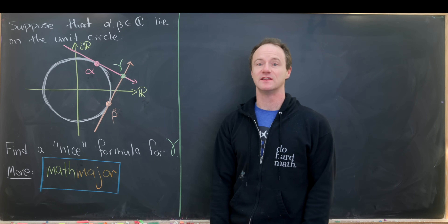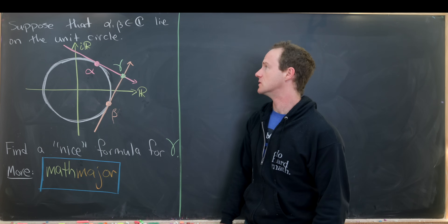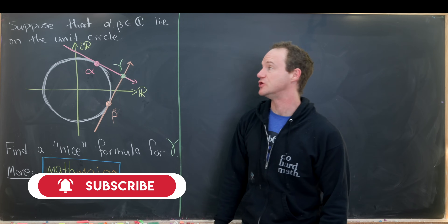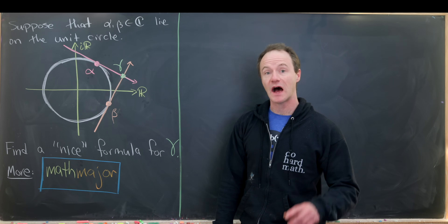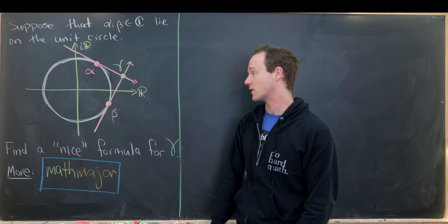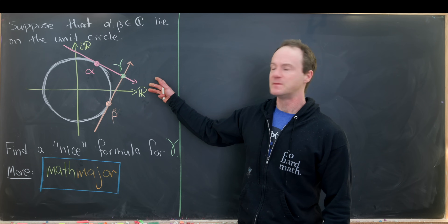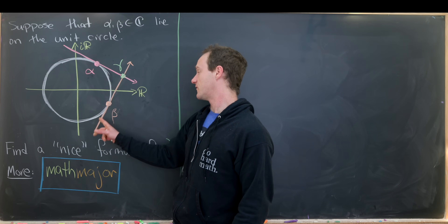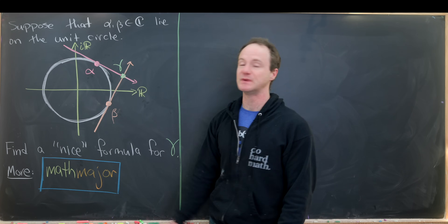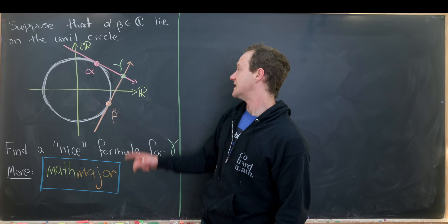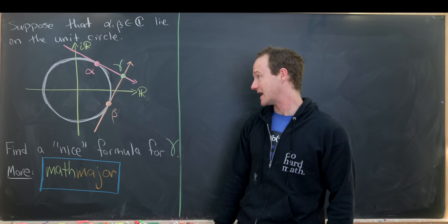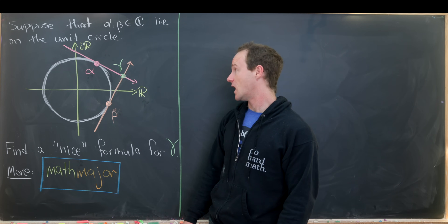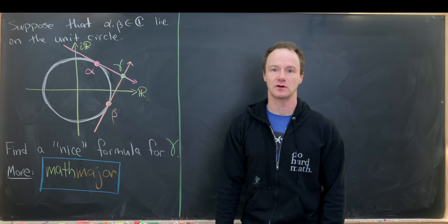Here I've got a nice geometry problem set in the complex plane. Let's suppose that alpha and beta are in the complex plane, and not only are they complex numbers, but they lie on the unit circle — a circle of radius 1 centered at the origin. We want to consider the lines tangent to alpha and beta, drawn here, and find a nice formula for the intersection point gamma in terms of alpha and beta.